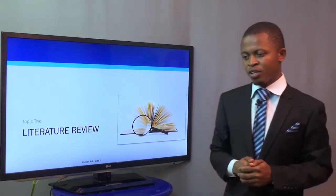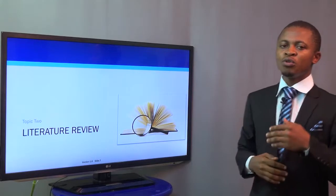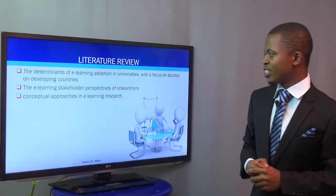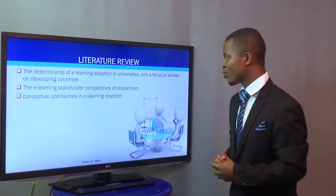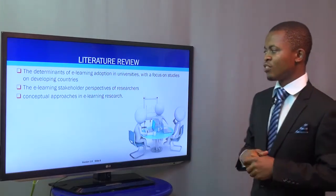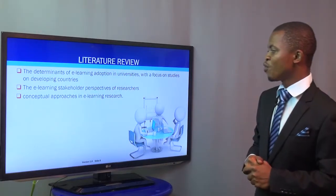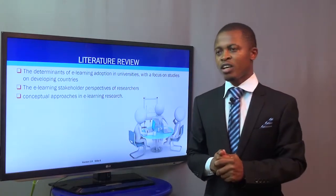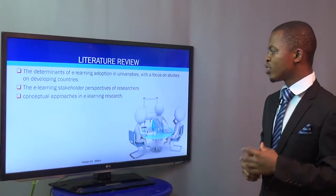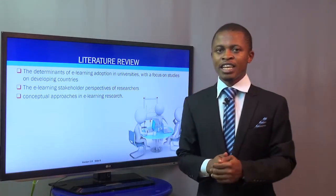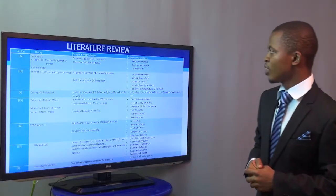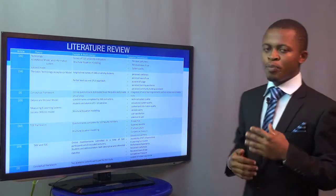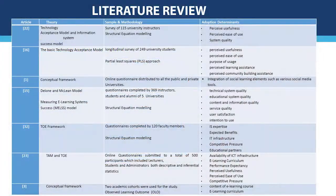The literature review took three things into consideration. It was intended to find the determinants of e-learning adoption in universities with a focus on studies on developing countries. The review also focused on e-learning stakeholders' perspectives — that is, where researchers focused in conducting e-learning research — and then conceptual approaches in e-learning research, the theories and frameworks researchers used. Papers were synthesized and the adoption determinants were pulled out, including perceived usefulness, perceived ease of use, system quality, and a whole lot of others.